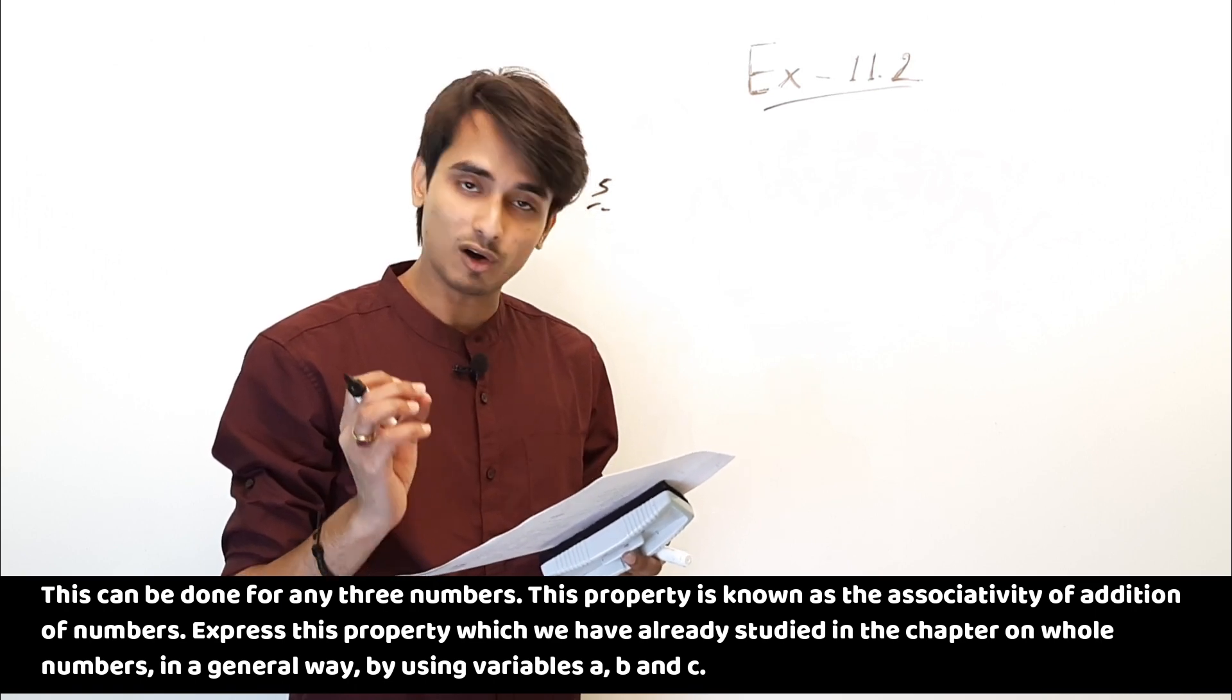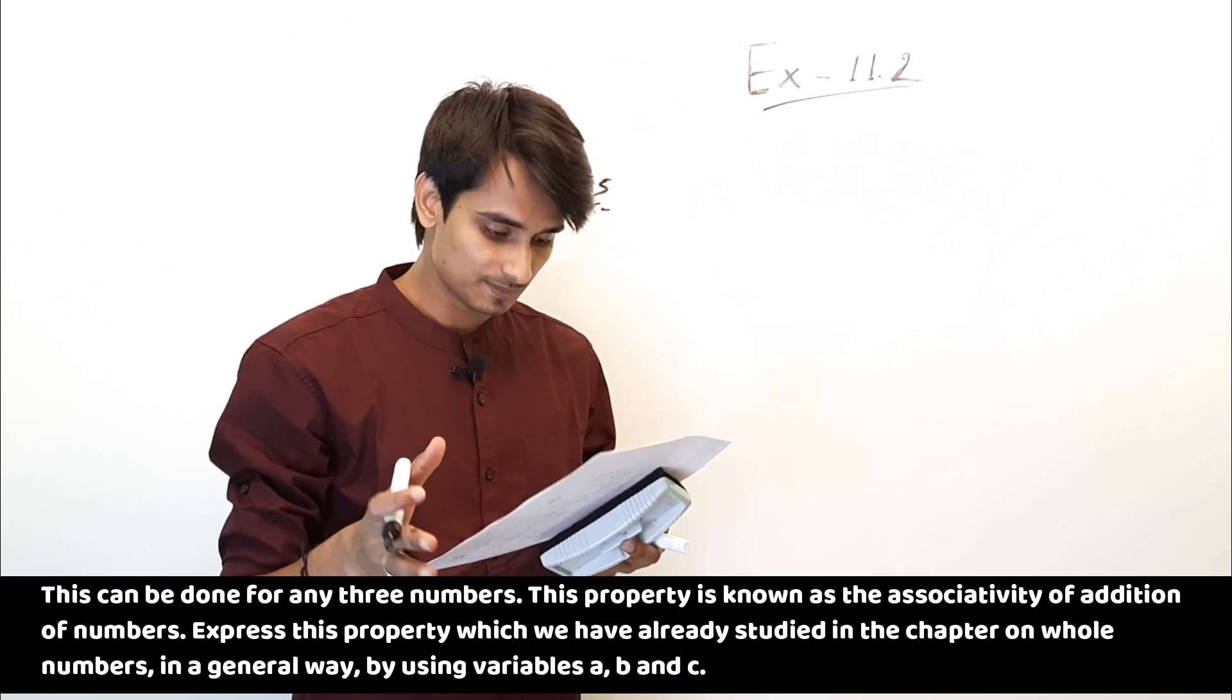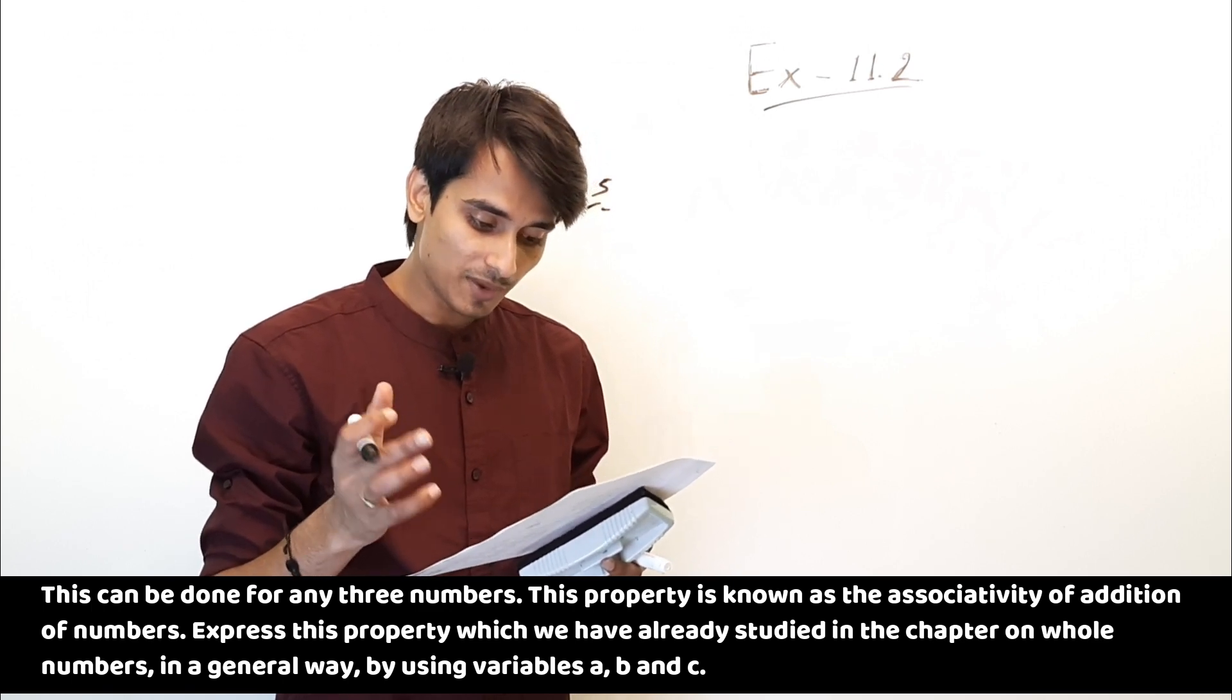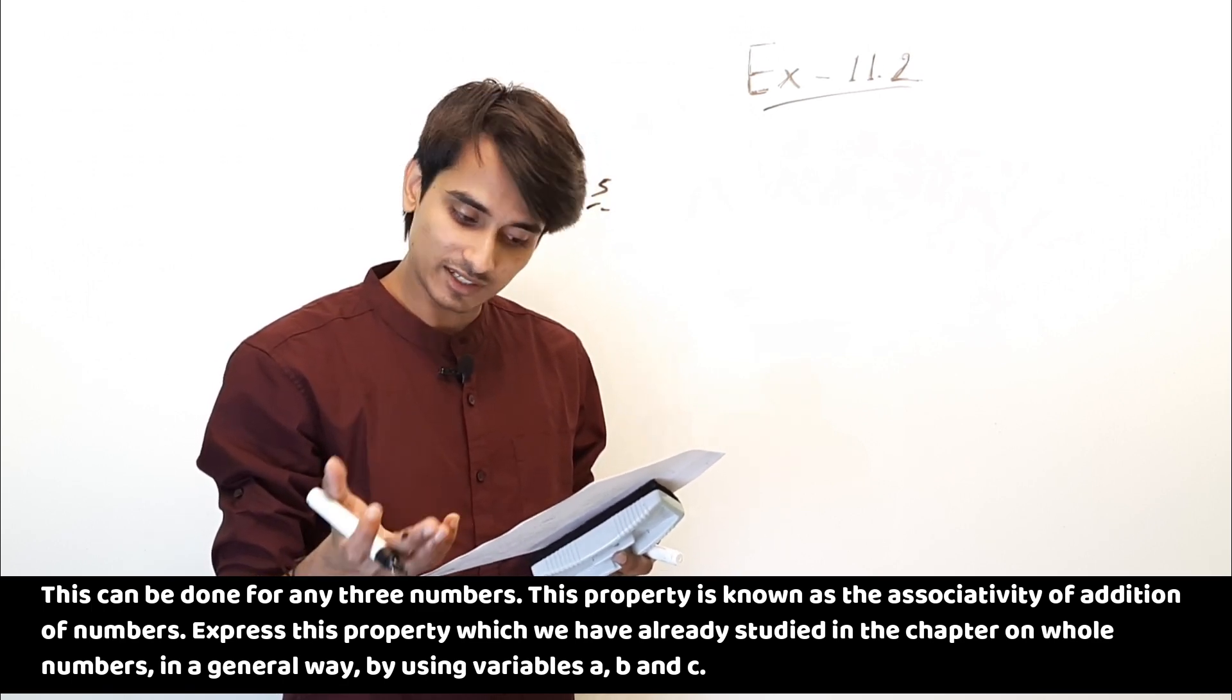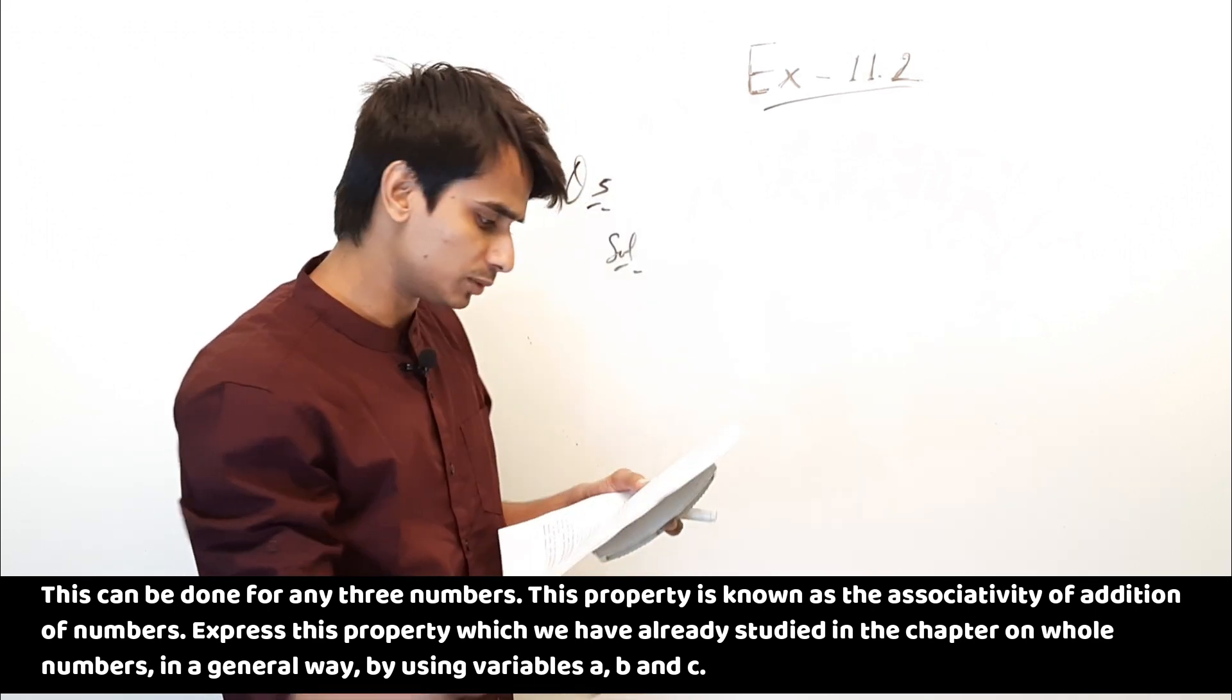So associative property of addition is: A plus B plus C equals A plus (B plus C). So this is the answer, this is the equation, this is the final answer.